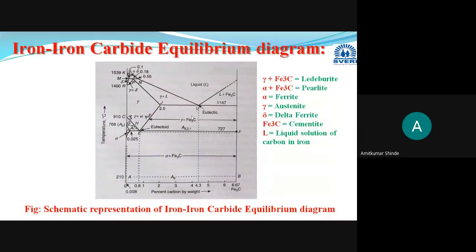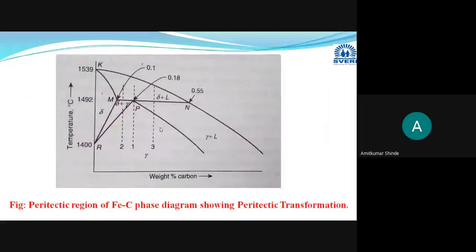The iron-carbon phase diagram we are studying is for plain carbon steel only. Depending on the addition of other alloying elements, there may be changes in this diagram — it will be different for different steels. What changes occur after addition of alloying elements is what we are going to discuss under the title 'Effect of Alloying Elements on Steel.' Before going to the actual effect, we will first see the classification of alloying elements.